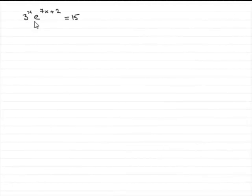Now, if we're to solve this equation, 3 to the power of x times e to the 7x plus 2 equals 15,